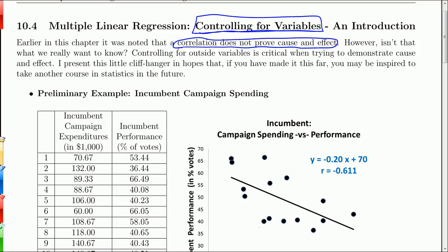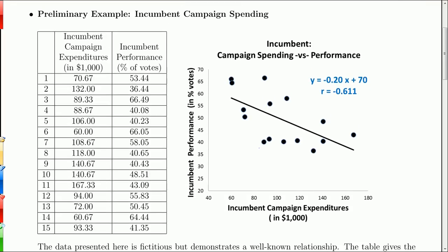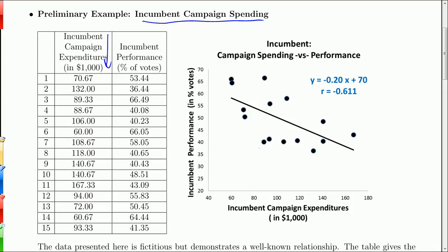Here's an example where we will do that. We start with this preliminary example: incumbent campaign spending. What we have here is a list of 15 elections where incumbents were involved. An incumbent is where the person holding the position is also trying to win the election for the following term. In the first column, we have the campaign expenditures in thousands of dollars — so this shows a campaign expenditure of 70.67 thousand dollars. And then the second column gives the incumbent's performance in terms of the percentage of votes.